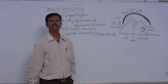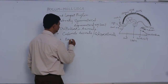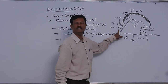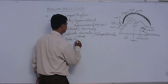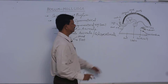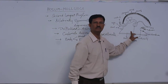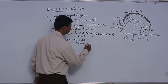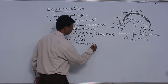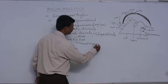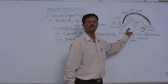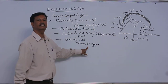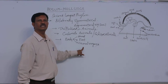The body is mainly divided into three parts: head, which is present at the anterior end of the body; foot — a muscular foot is present; and visceral organs. The digestive system, respiratory system, circulatory system, nervous system, etc. are present in the body cavity. So the body is mainly divided into head, foot, and visceral organs.